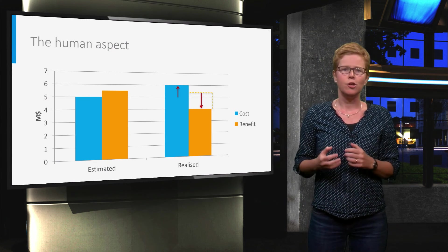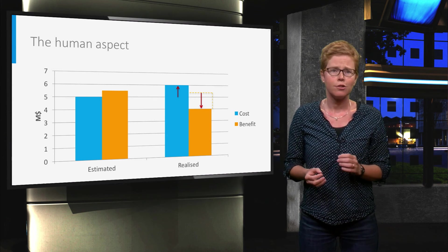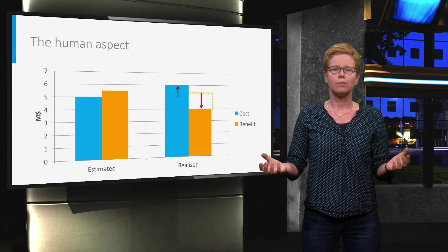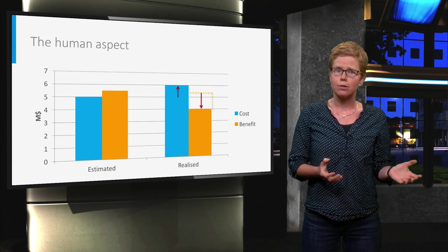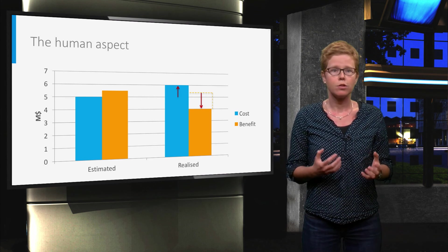In estimating, the human aspect plays a role in different ways. The estimator really should involve team members, using a proactive and open approach. Different stakeholders have different interests in the project, and they might try to influence the cost estimate.